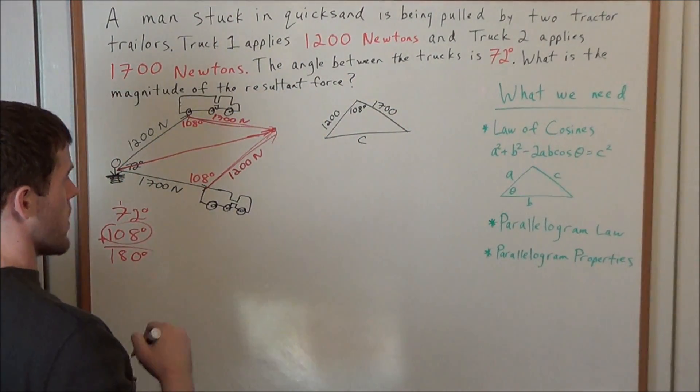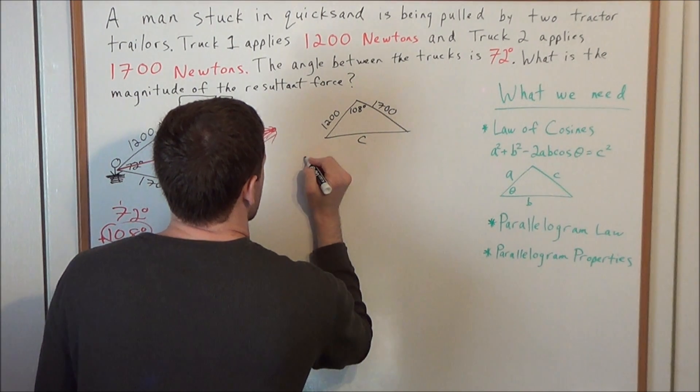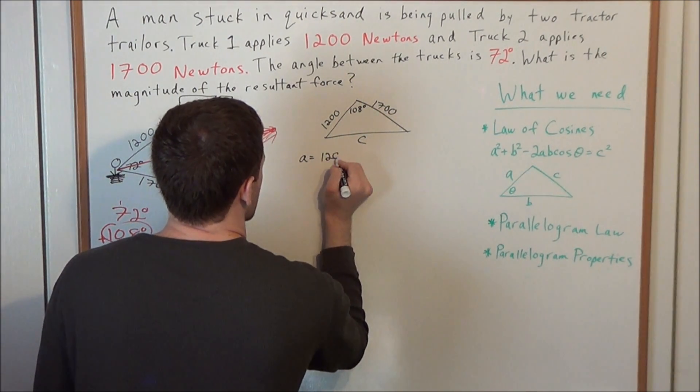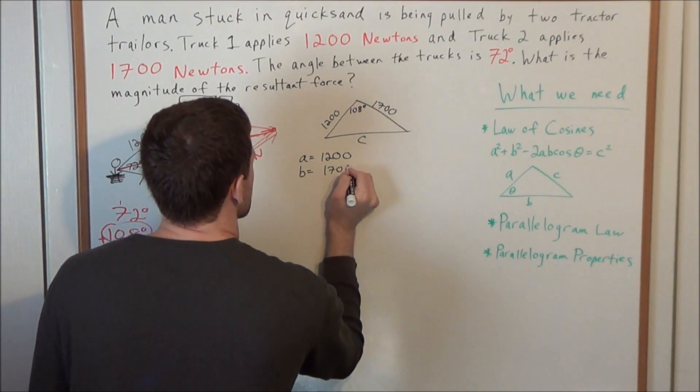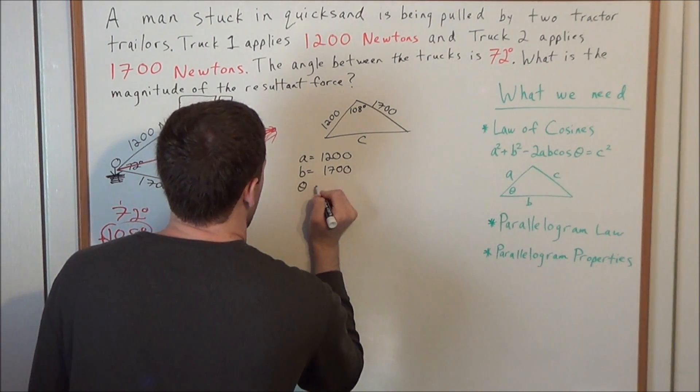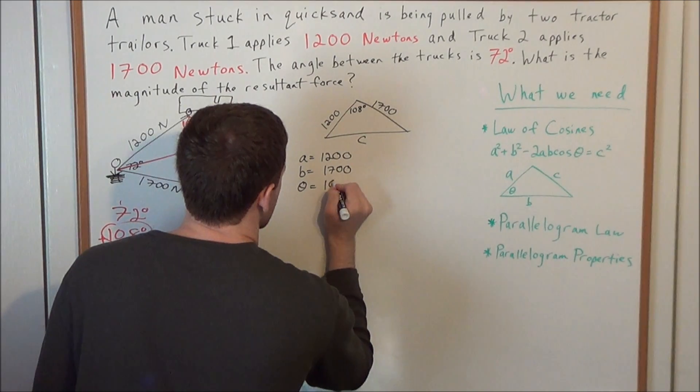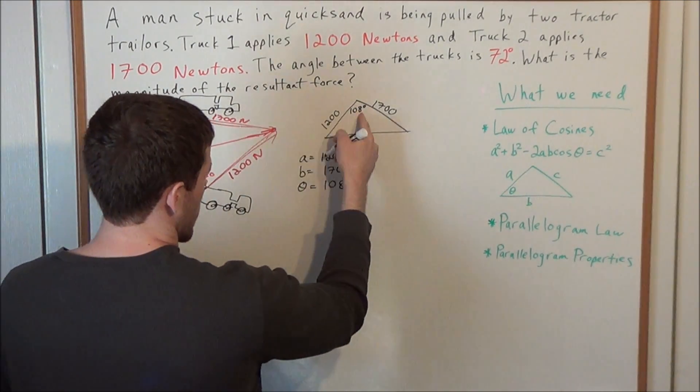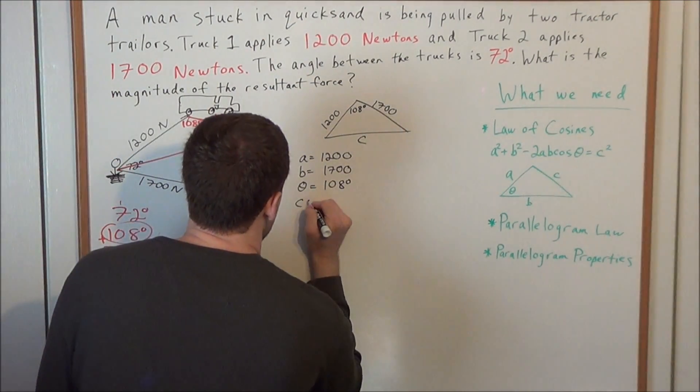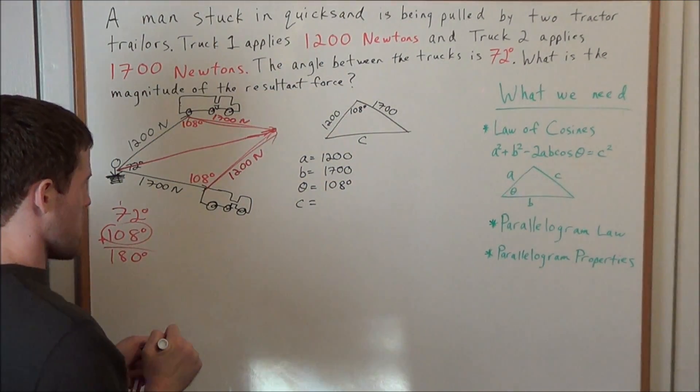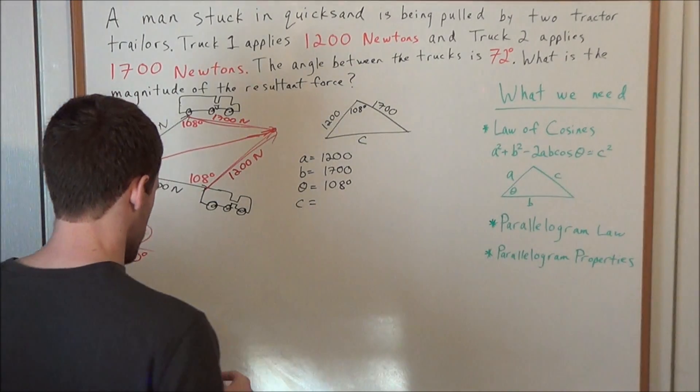So now let's go ahead and identify: we have A equal to 1200, B equal to 1700, we're looking at a theta of 108 degrees. Keep in mind we have this side angle side relationship that we need to use this law of cosines, and we're looking for the missing side C. So now let's apply this information to the law of cosines, and we can find this resultant force.